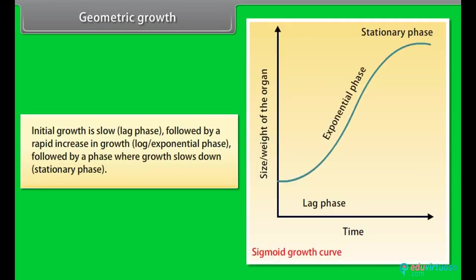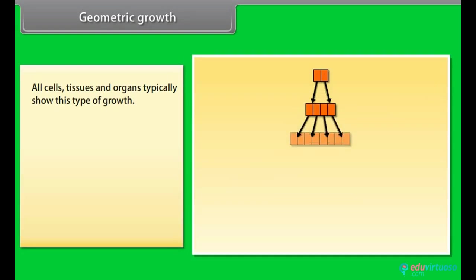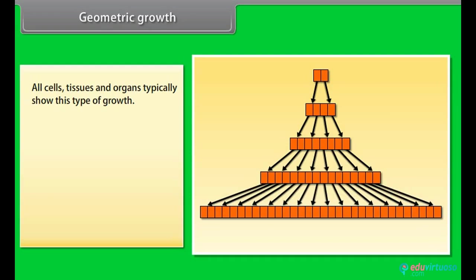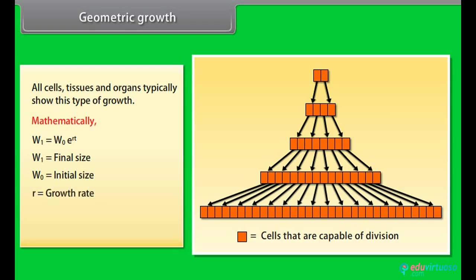Geometric growth. Initial growth is slow, followed by a rapid increase in growth, followed by a phase where growth slows down. All cells, tissues and organs typically show this type of growth. Mathematically, W1 is equal to W0 into exponent RT. W1 is equal to final size. W0 is equal to initial size. R is equal to growth rate. T is equal to time of growth. E is equal to base of natural logarithms.